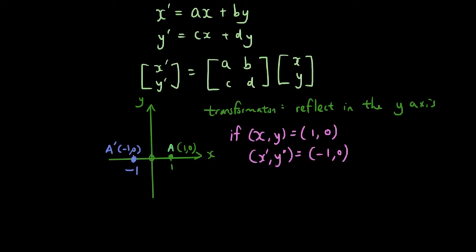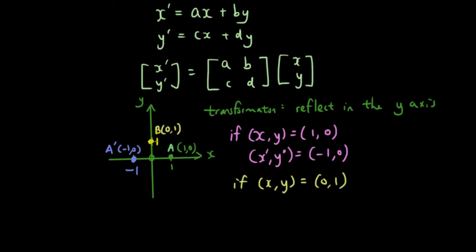Now let's do another example with point B at coordinate 0, 1. If x, y equals 0, 1 and we reflect this point in the y-axis, we end up with the exact same point because this point is situated on the y-axis. So x', y' equals 0, 1 again.